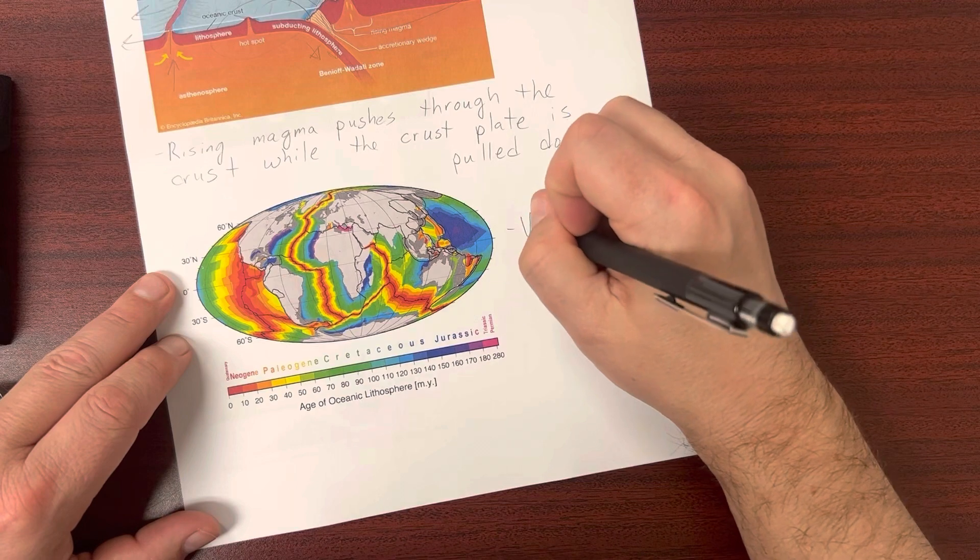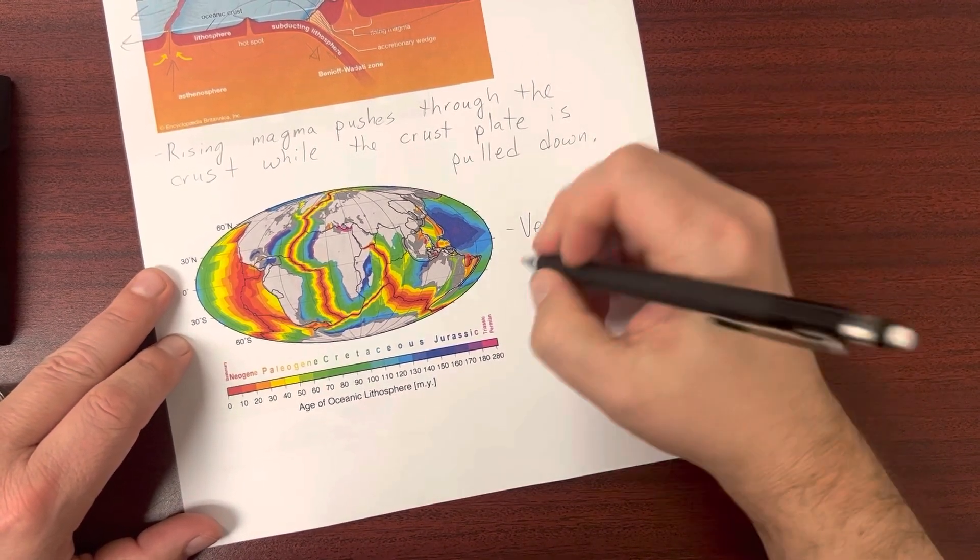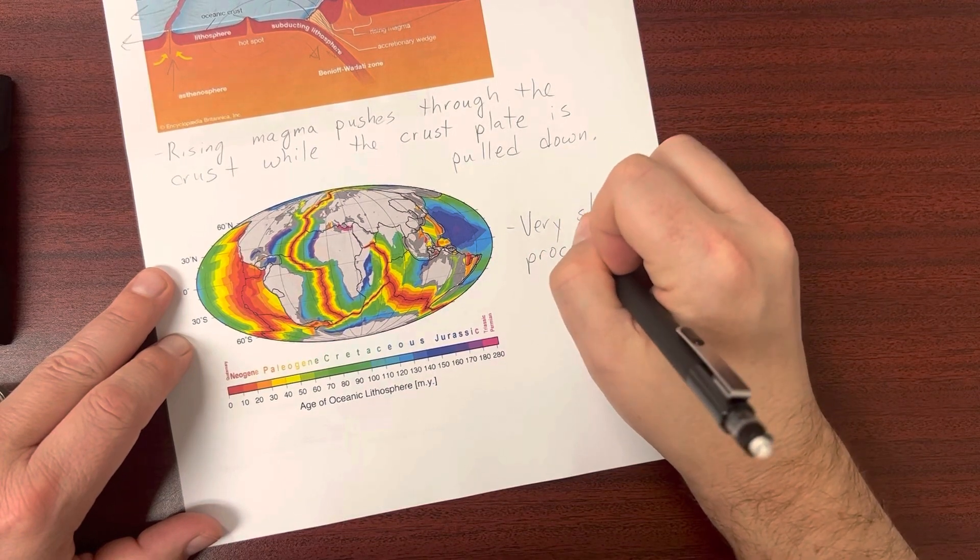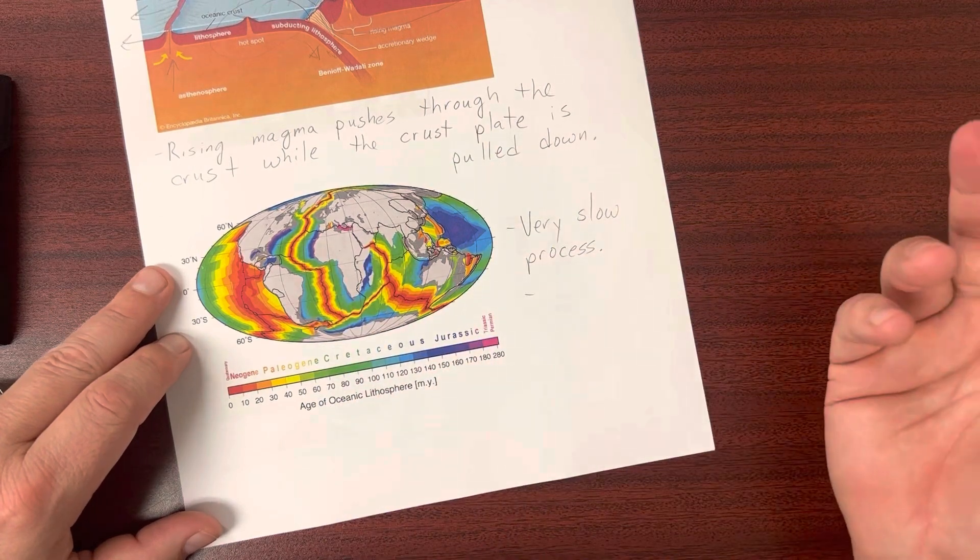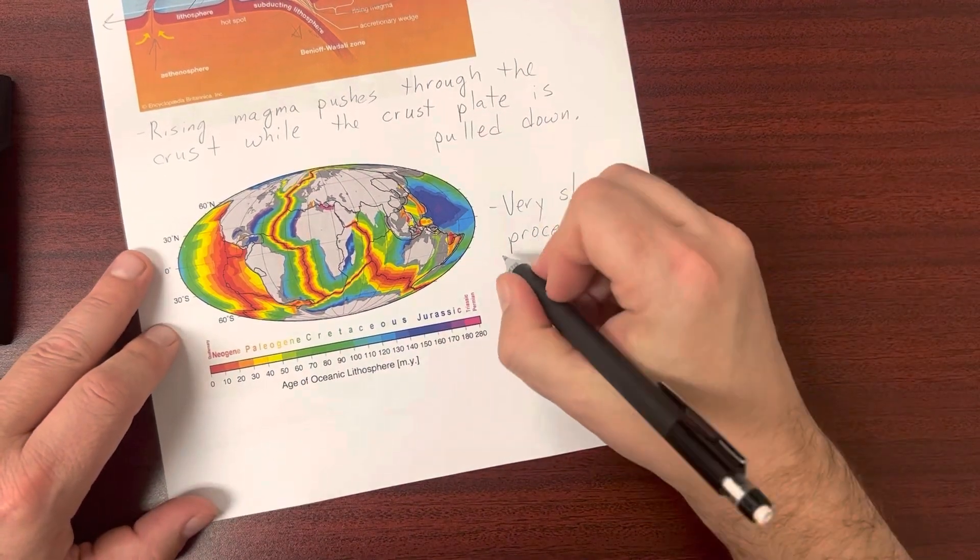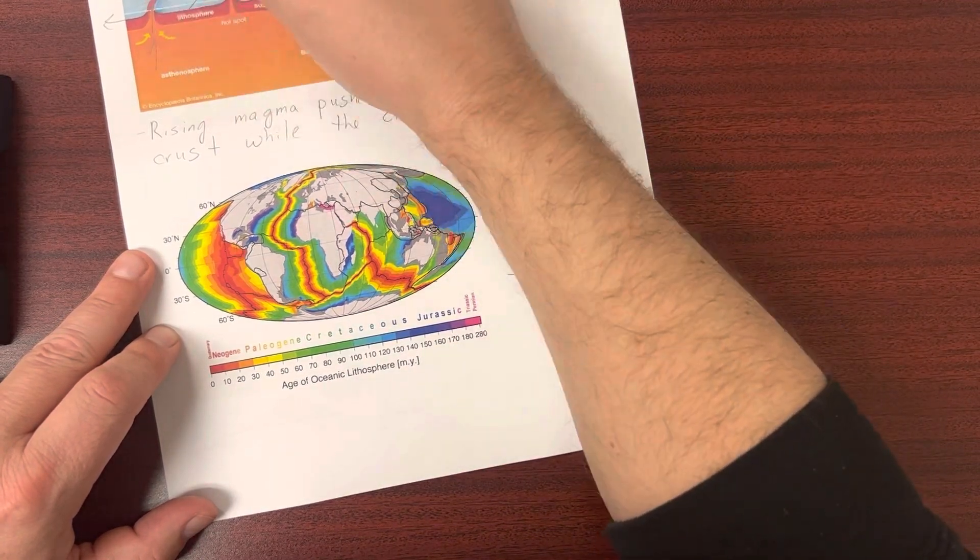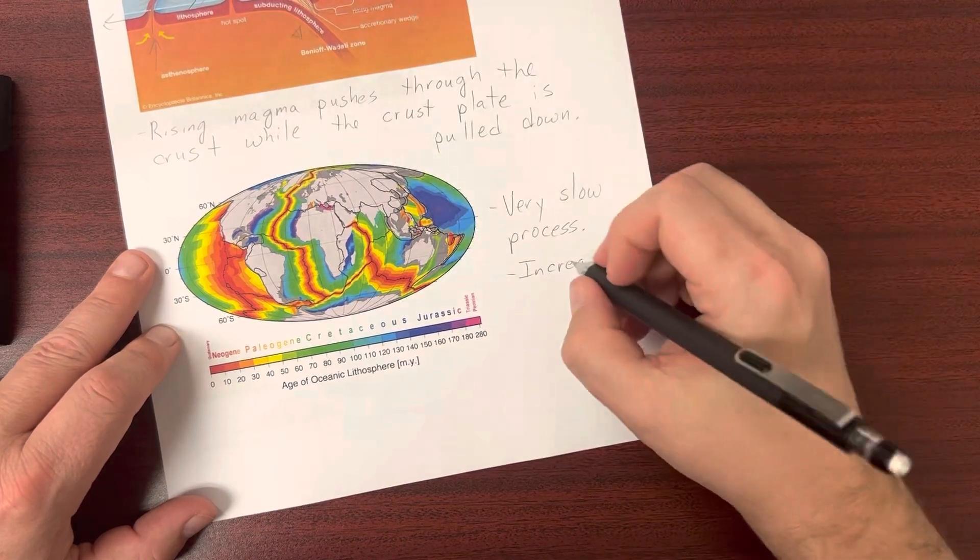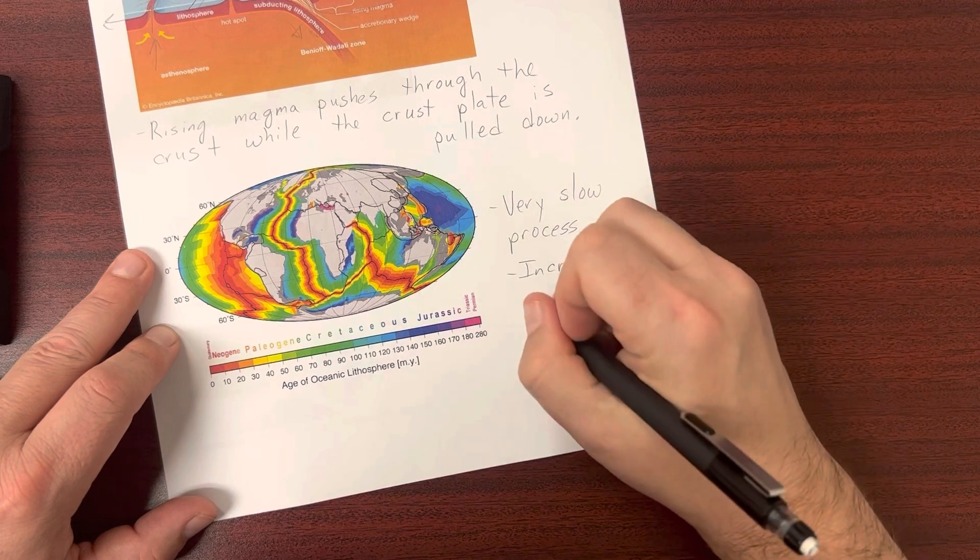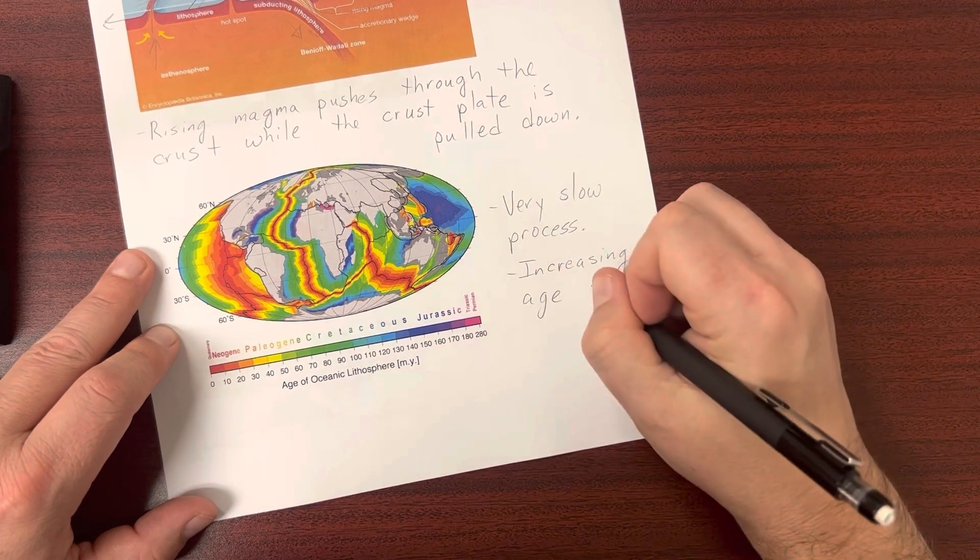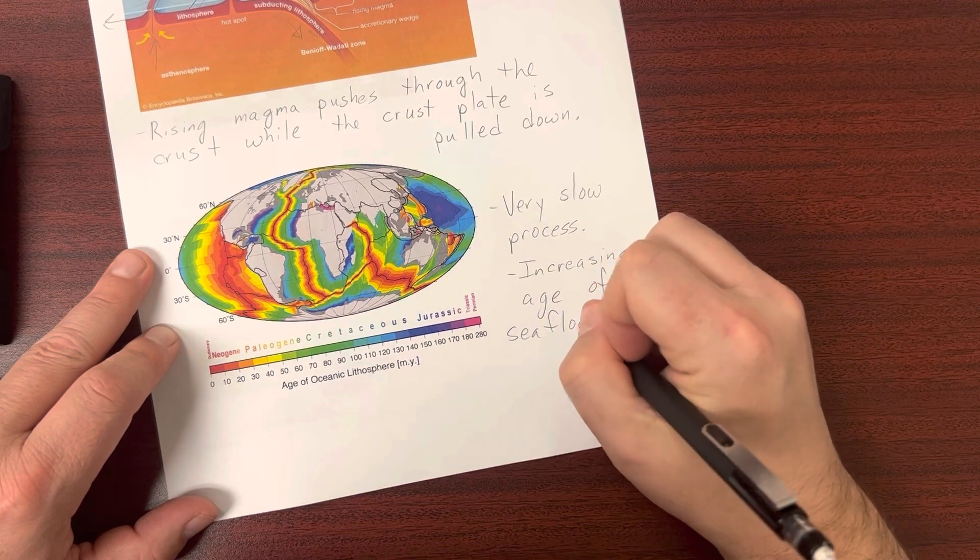We can see this when we look at age of the ocean floor. This is a very slow process. And what we see when we look at the rocks of the ocean floor, and we can date the rocks and tell how old they are, is that as you move away from the mid-ocean ridge, this mountain range where the new magma is coming up, as you move away from that, you find that the age of the rocks increase the further away you get from that mid-ocean ridge.